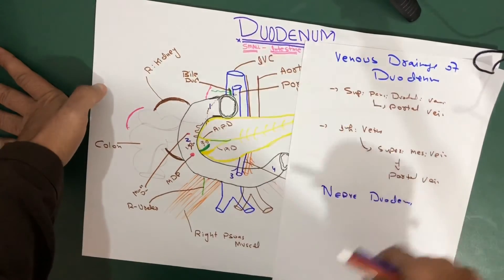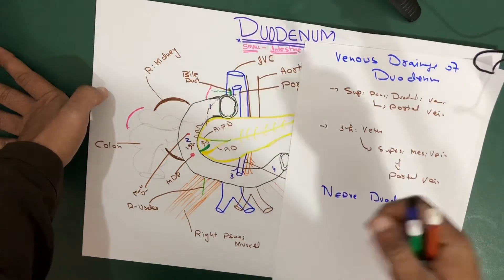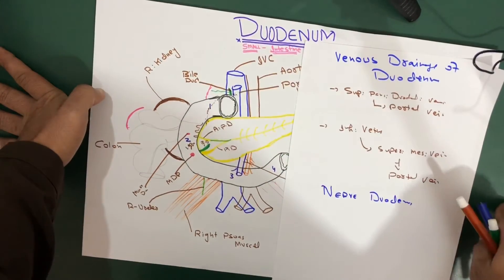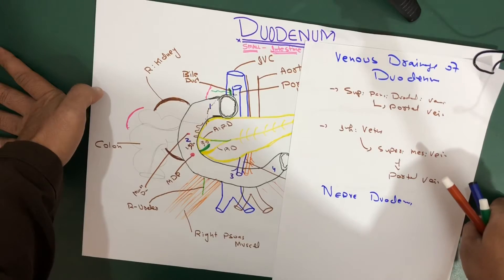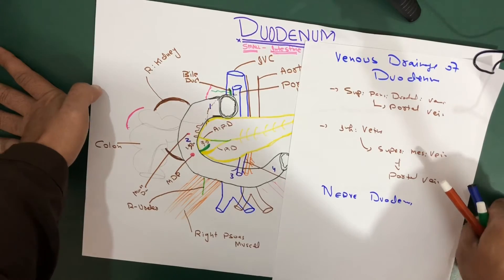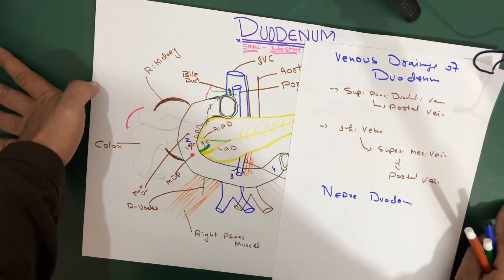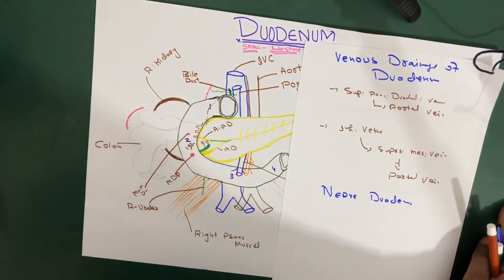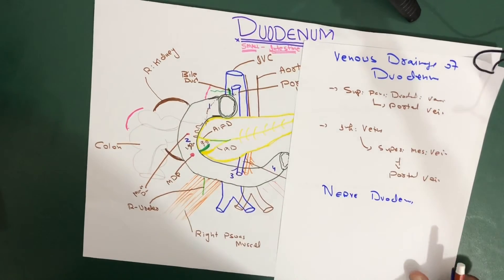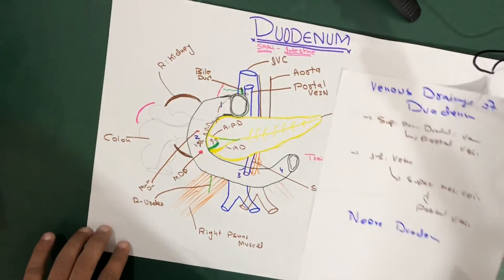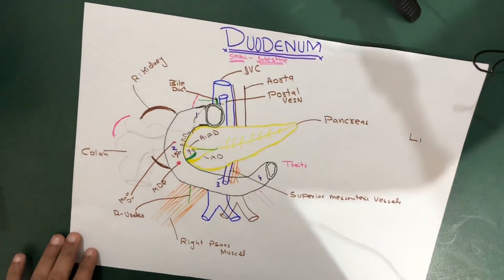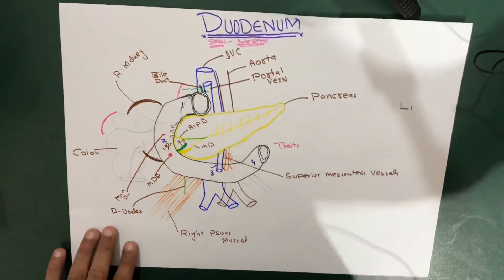This is all about the duodenum. There is also a clinical aspect — a duodenal ulcer — which is important for your exam, so let me talk about the duodenal ulcer next.